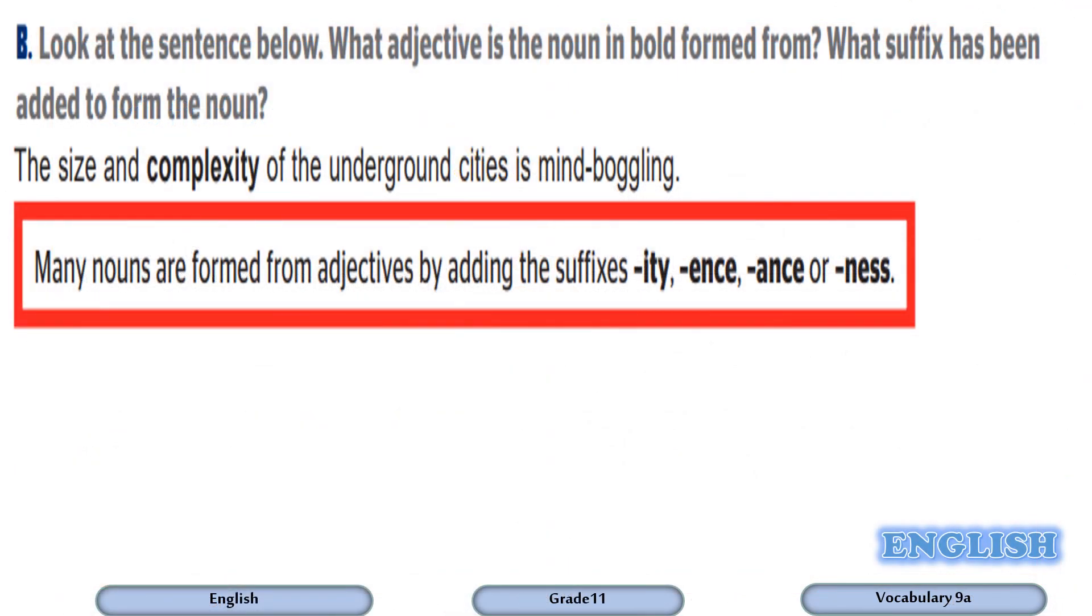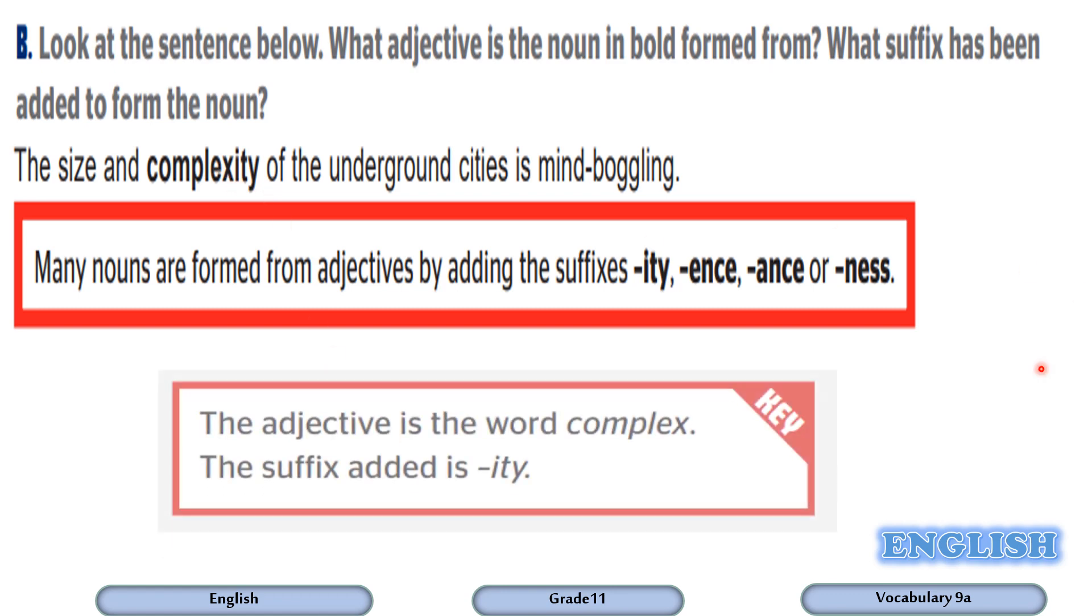I hope you've got now a clear idea about the difference between a prefix and suffix. Now let's do activity number B. Look at the sentence below. What adjective is the noun in bold formed from and what suffix has been added to form the noun? So this is the word. The size and complexity of the underground cities is mind-boggling, which is overwhelming. So the word is complexity, and of course the adjective is complex.